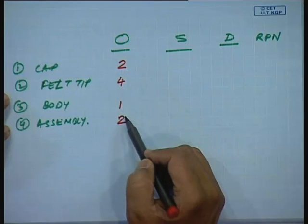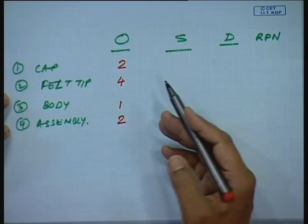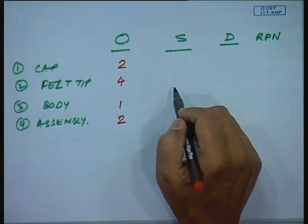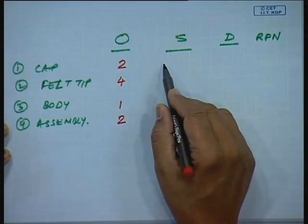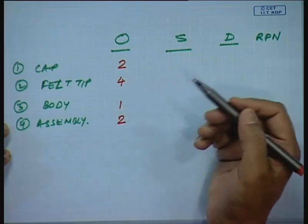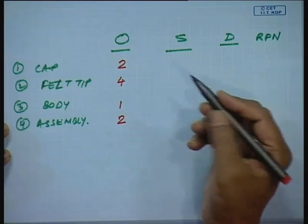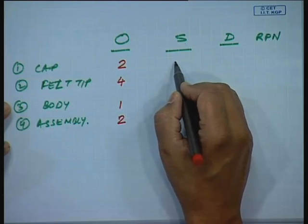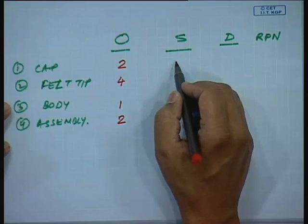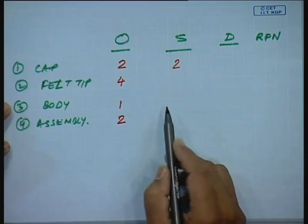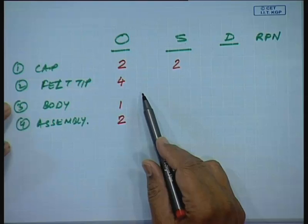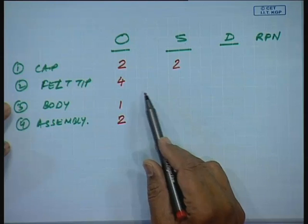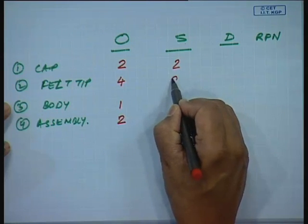These numbers — 2, 4, 1, 2 — were very judgmental and subjective; if I ask each of you for your own rankings you may come up with similar values. Next is severity. Suppose the cap has failed: it will perhaps not influence or affect the performance of the pen that much, so I will give it a low number. For the felt tip, if it fails, it is very severe and will affect performance, so I give it a very high number.